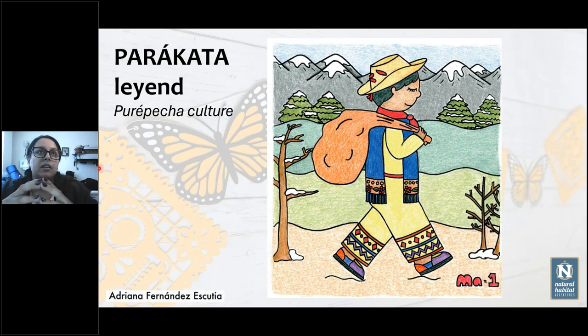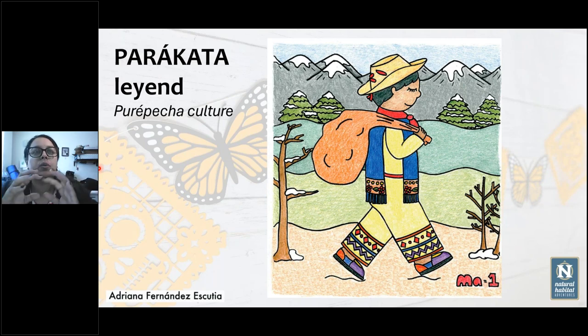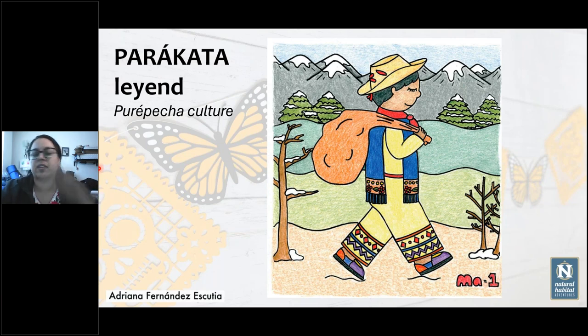This is a photo from the cemetery of Janitzio. I consider it very beautiful — it's a cemetery, and you usually think of a cemetery as very sad, dark, and scary, but not in Mexico. Before we finish, I want to tell you a legend from the Purépecha culture that I consider very beautiful, and that has all of the cosmovision related to butterflies from central Mexico. The legend is called Paracata.